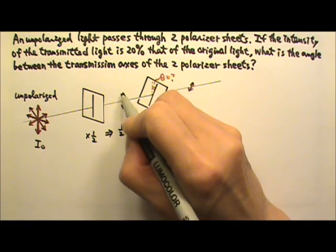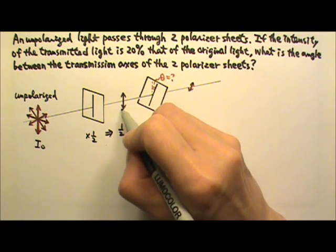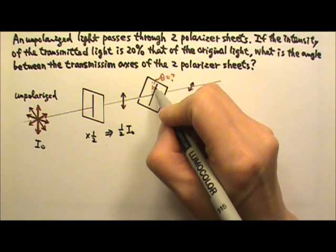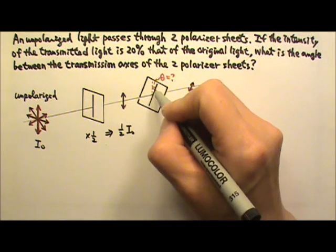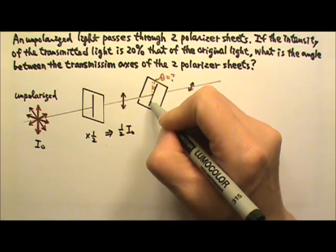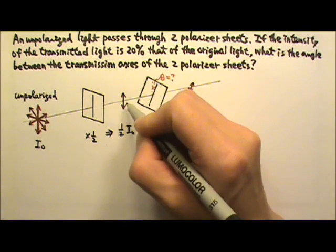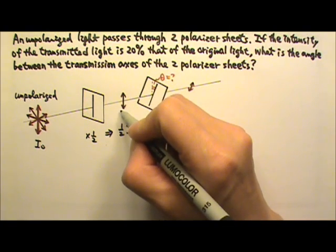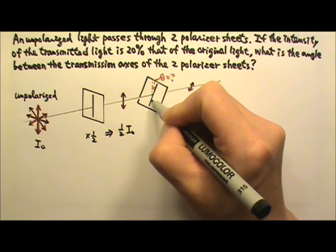And then this is the electric field. And we only get the electric field's component along this direction to go through. So we need to find the electric field's component along this direction.